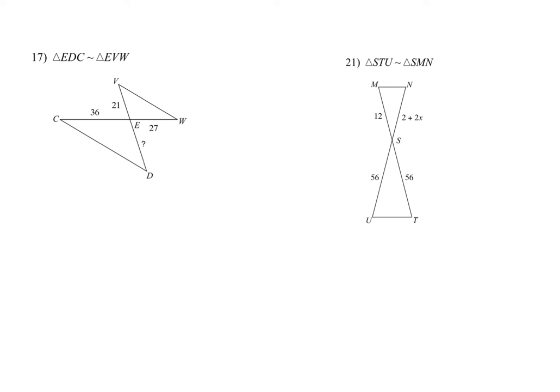The next set is just, yes, they are similar. Now find the side. So in this case, you want to just make sure you do the right order. E corresponds to itself. D corresponds to V. And C corresponds to W.